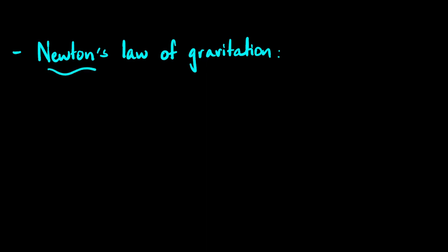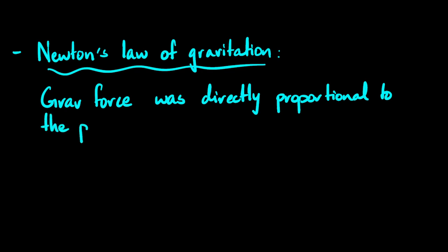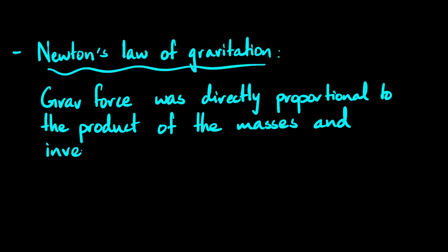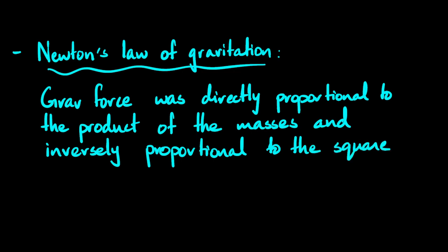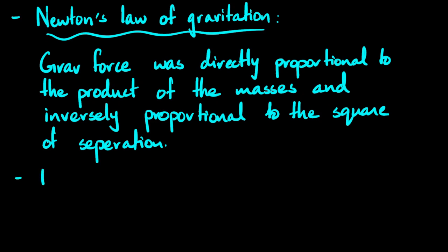So this is what Newton's law of gravitation says. What Newton discovered was that the gravitational force was directly proportional to the product of the masses and inversely proportional to the square of their separation. The word 'separation' is important — if you just write 'distance' in your exam you could lose marks. When Newton formulated this law, he was referring to something called point masses.